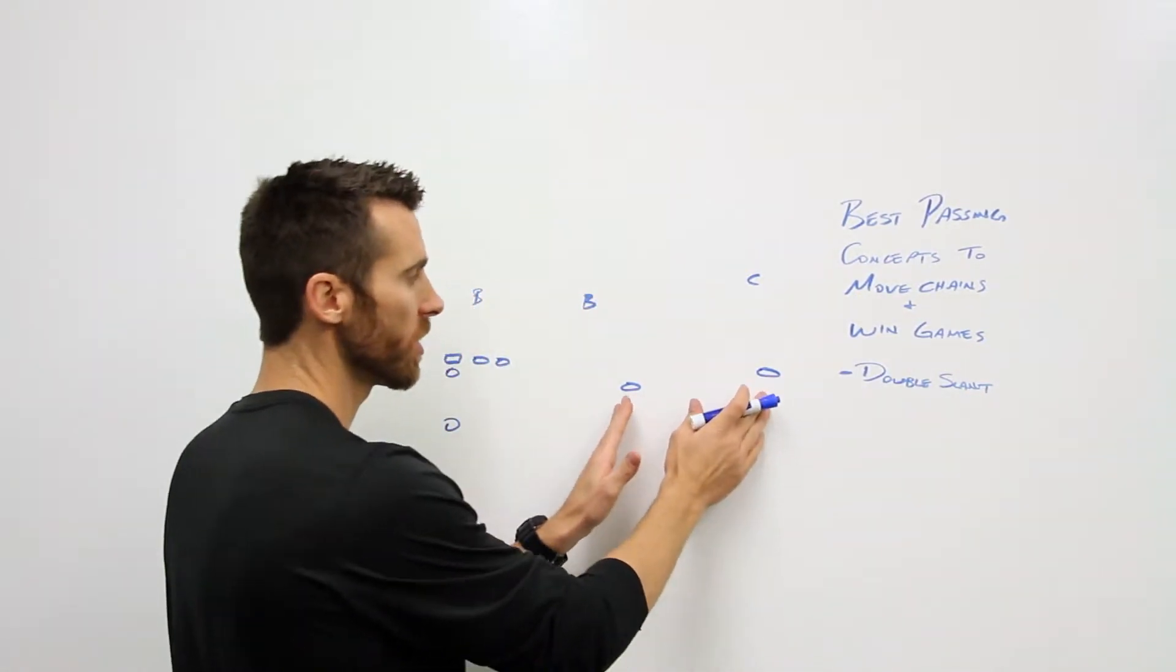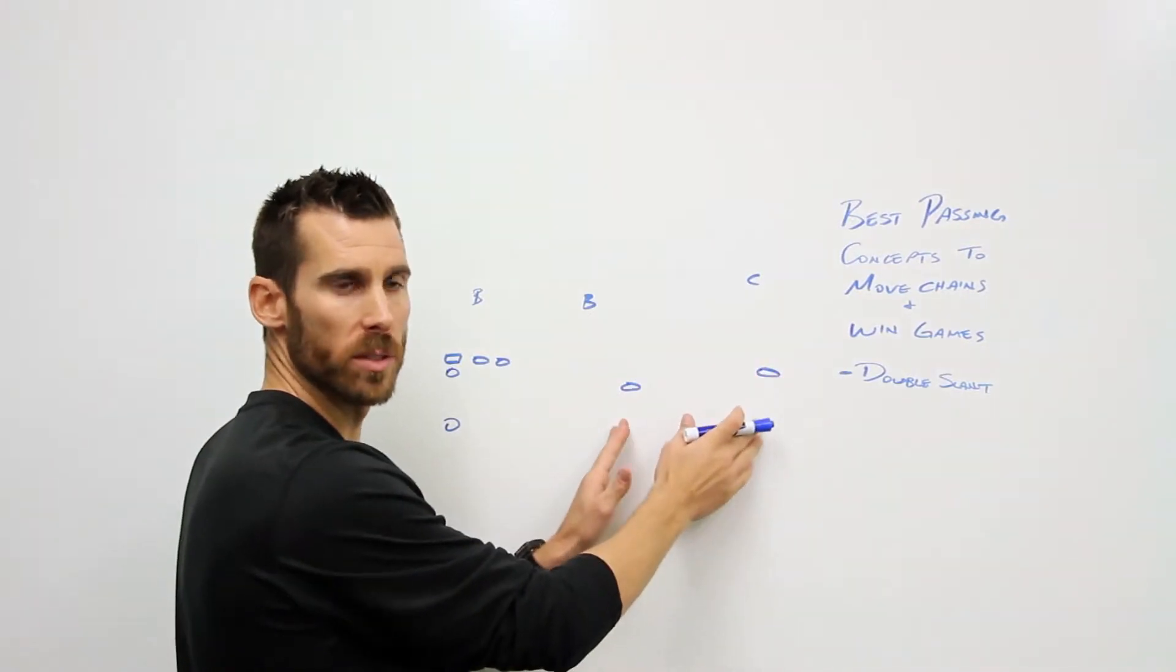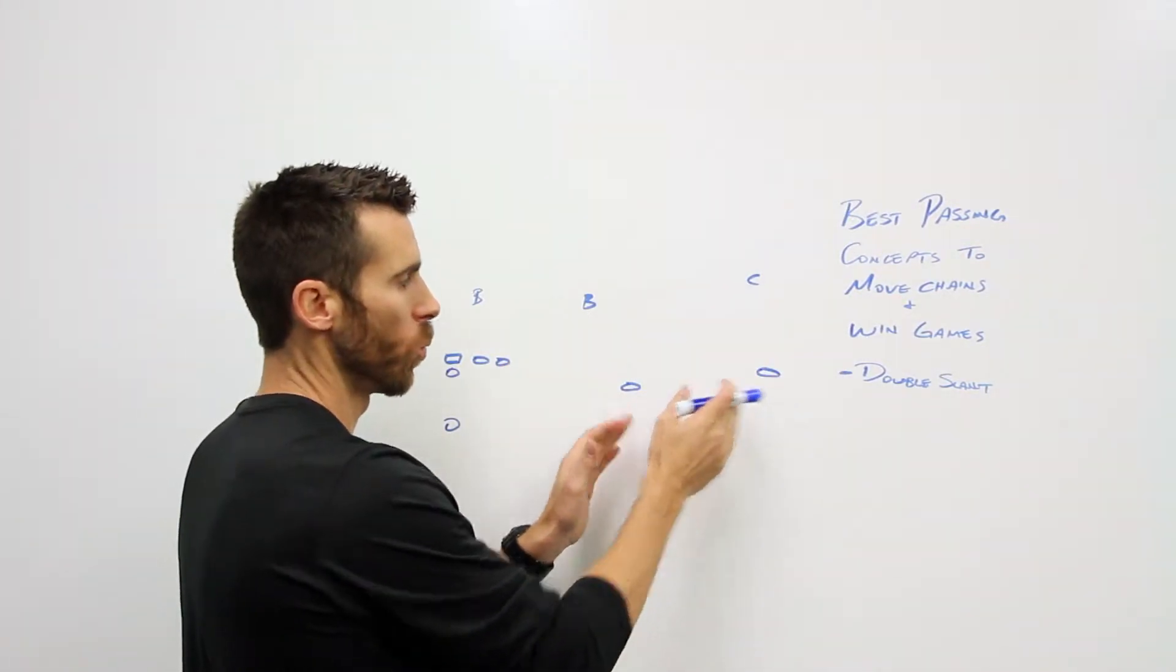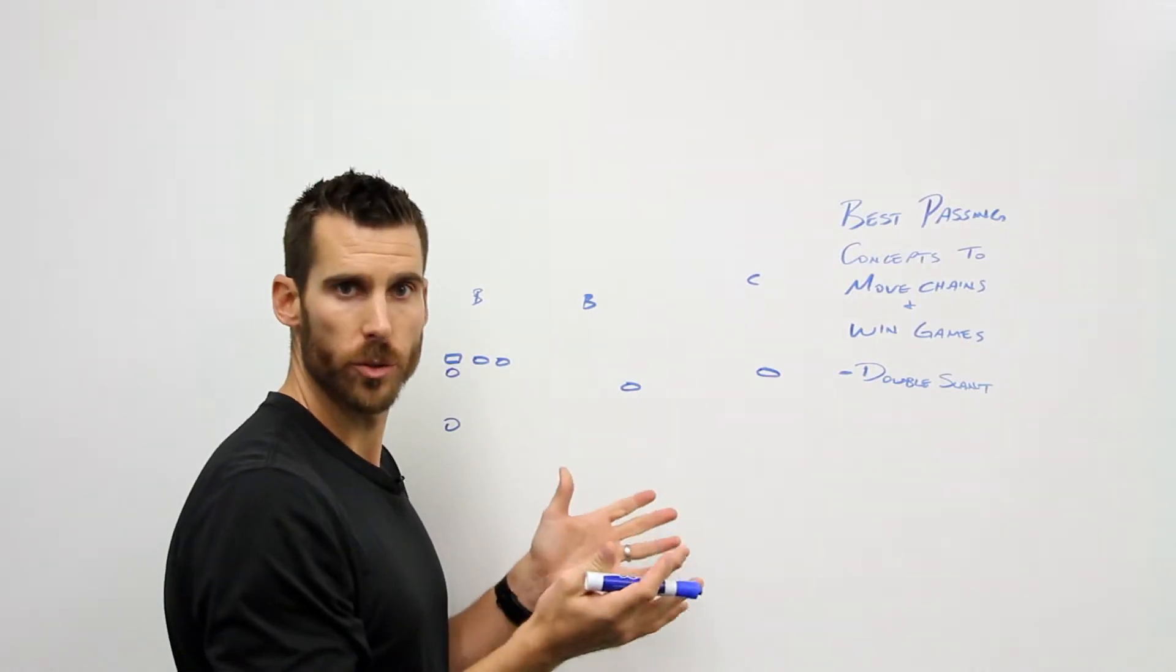So we've got two receivers out here. This does work better with two split out receivers rather than a tight end or something closer. So it works well with that two receiver side and we're going to run double slants.